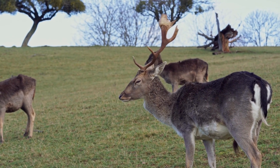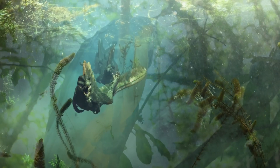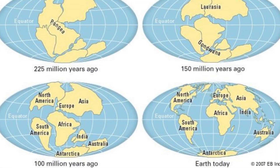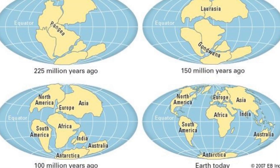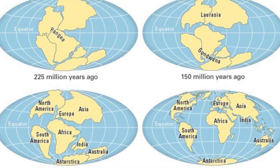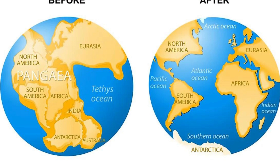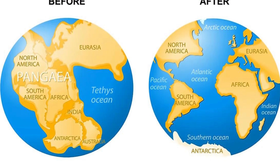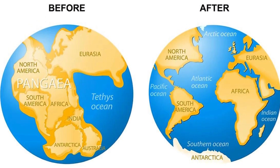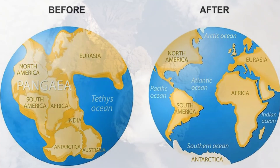Plate tectonics not only shapes the physical landscape, but also influences life on Earth. Over millions of years, plate movements have caused continents to drift apart, rearranging the global map. This drifting has had a significant impact on the distribution of species, leading to unique ecosystems and diverse life forms.